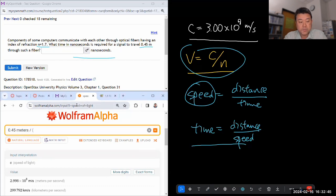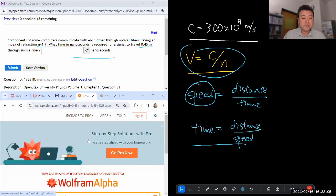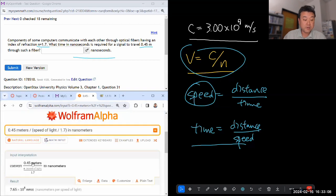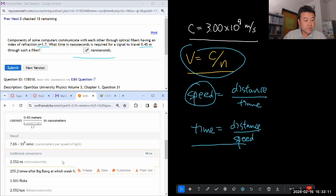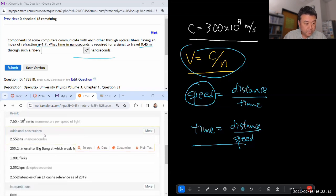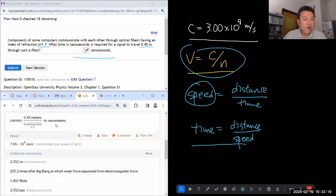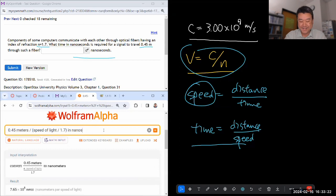It's going to be this expression. So let's start out with the distance. Distance is 0.45 meters, and this is one of the reasons I like WolframAlpha. It can handle the units, so I can just type in the units and kind of have it work out the units to get nanoseconds at the end. Divide by the speed, which will be speed of light divided by n. So that'll be 1.7.